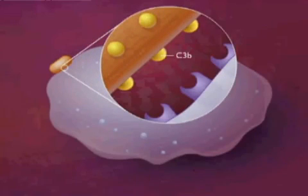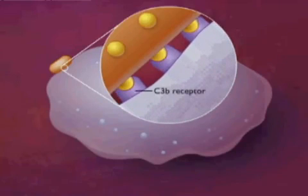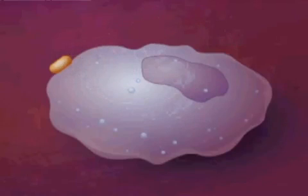For example, the C3B component of complement coats bacteria or other particles and then binds to C3B receptors on the phagocyte. This process of coating to enhance phagocytosis is called opsonization.